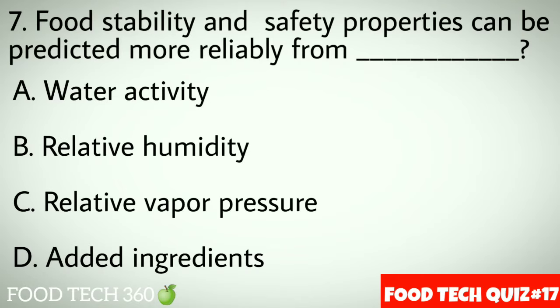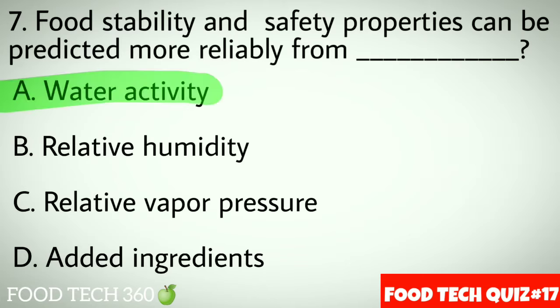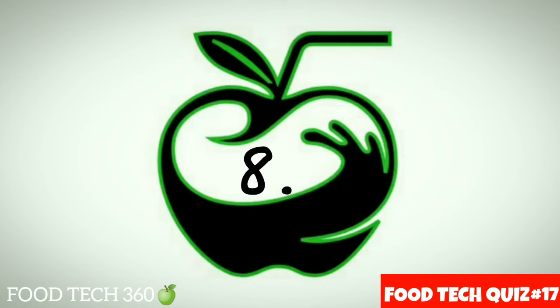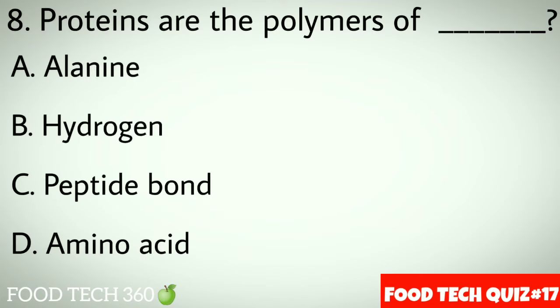Question number 7: Food stability and safety properties can be predicted more reliably from dash. Options: A. Water activity, B. Relative humidity, C. Relative vapor pressure, D. Added ingredients. Correct answer: A. Water activity.